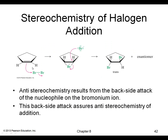Here's an example with bromine. The pi electrons attack and we form the bromonium ion. Then the second bromine attacks from the opposite side, so we end up with the trans product — anti addition occurring.